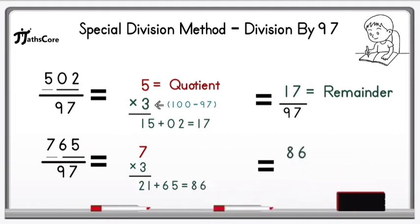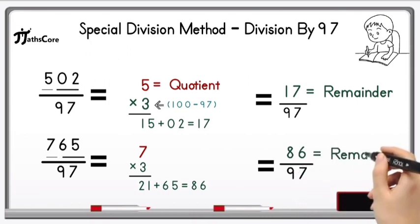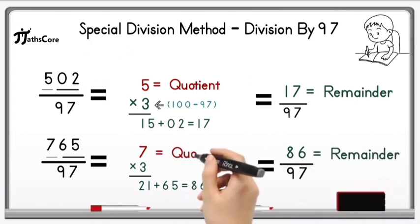Now divide this 86 by 97. But it is not possible because 86 is less than 97. So 86 is the remainder and 7 is the quotient.